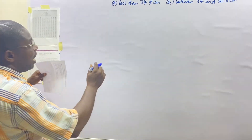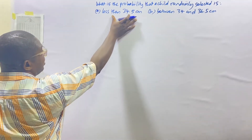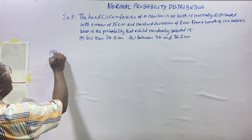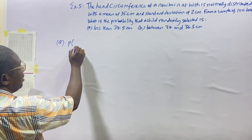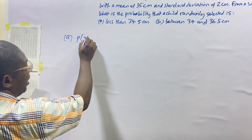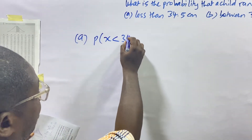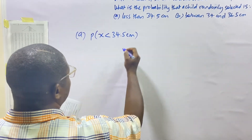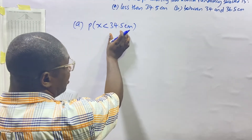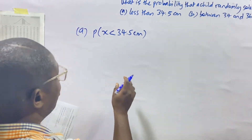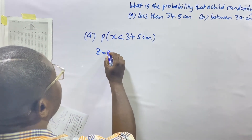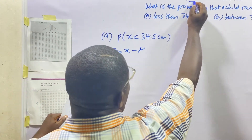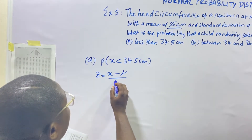In solving this, the first thing is to identify what we're looking for. Part A is looking for P(X < 34.5 cm). We will standardize this by finding the Z-score. The Z-score formula gives us X minus the mean, divided by the standard deviation.